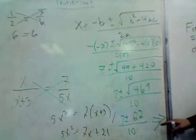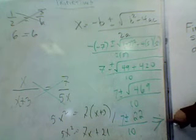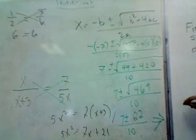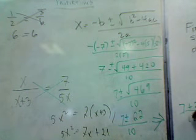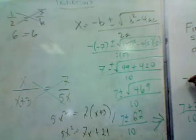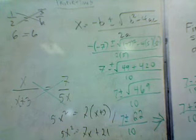So, 7 plus or minus 22 over 10, all right? Which we're now going to just figure out. 7 plus 22 over 10 is one of the roots, and 7 minus 22 over 10 is the other. So, we've got negative 15 over 10, and this one is equal to 29 over 10. Negative 15 over 10, you reduce it, and that's equal to negative 3 over 2, and this is equal to 29 over 10, which can't be reduced. Those are our two roots. That's our answer.